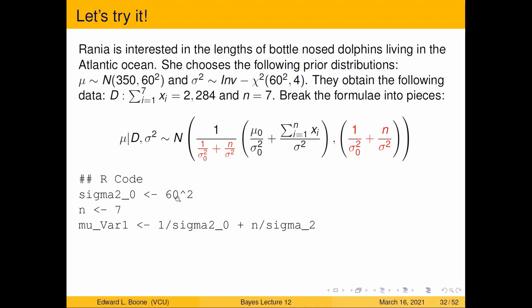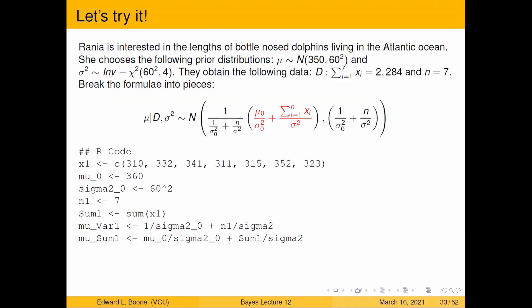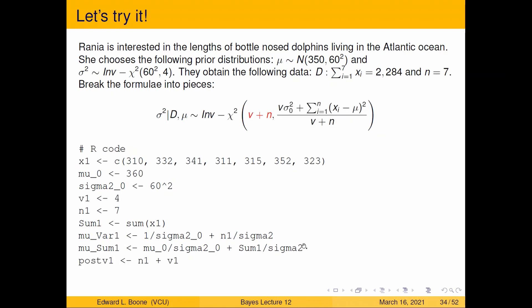I get this sigma squared zero equals 60 squared, and n is seven. Mu variance is equal to this piece here as one over sigma. So it's this piece here, actually, one over sigma squared sub zero and over sigma squared. I get that piece. Now I got some data here, my X's, and now I have mu zero. I need 360 involved. And then I'm going to get the sum one, the sum of the X. So it's just going to add those up. And then my mu sum here is going to be mu zero over sigma squared zero plus my sum of the X's divided by sigma squared. So we're moving on here. We're going to get this piece, and it happens to be this piece as well.